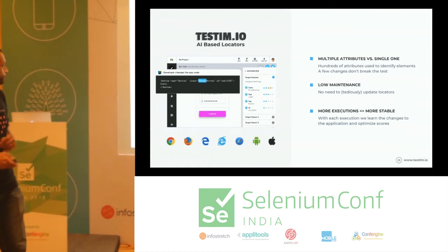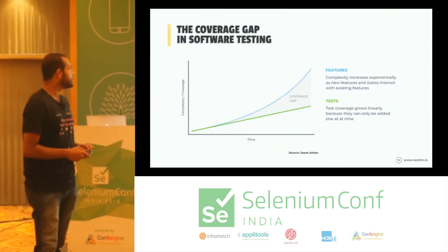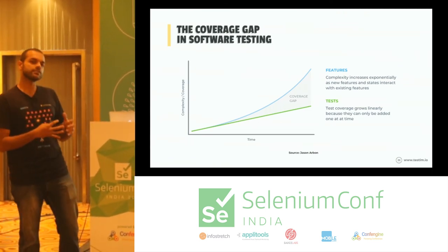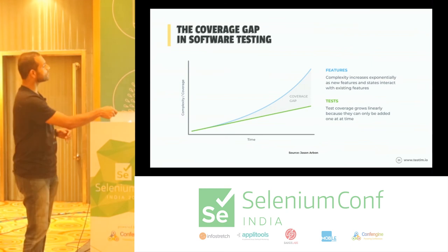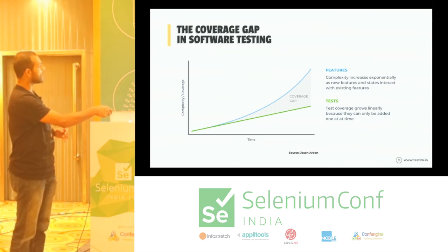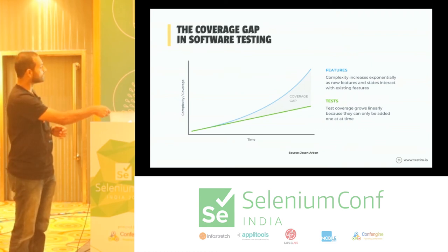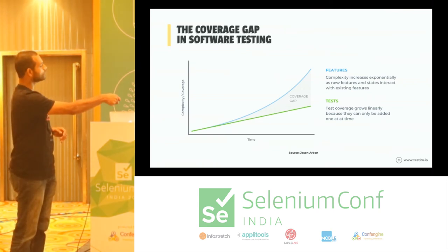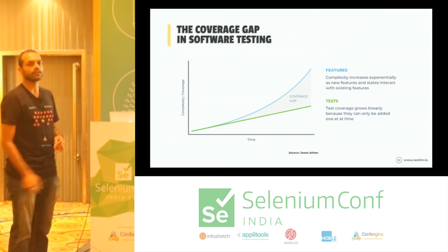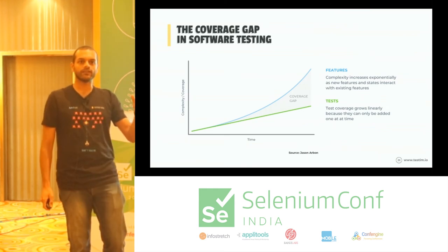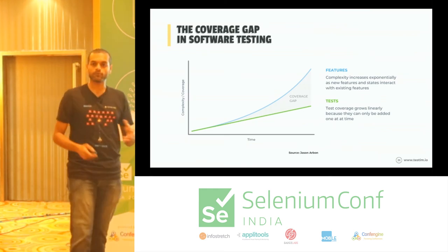This is the coverage gap in software testing right now. The complexity of different software features is increasing exponentially, but tests are growing only linearly. There's a huge gap in between, and that's what AI can help solve.